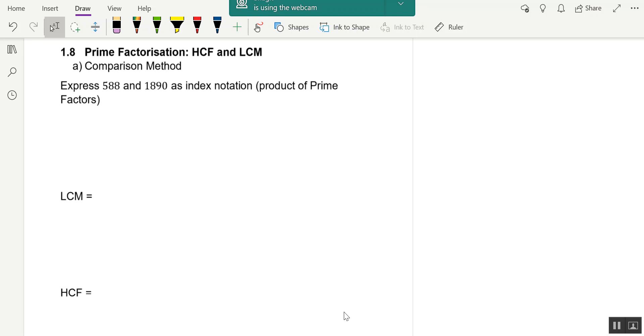This question on prime factorization is about how to split your number into a product of prime factors, or index notation as it's sometimes called, and then using them to find the LCM or the HCF. Prime numbers are numbers that can only multiply by one and itself - two, three, five, seven, eleven, and so on.